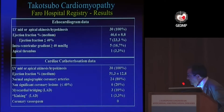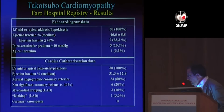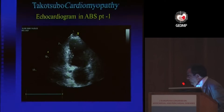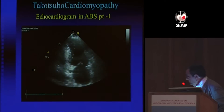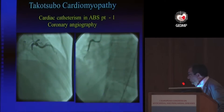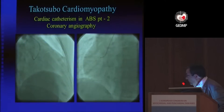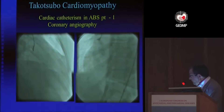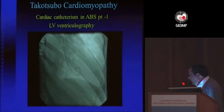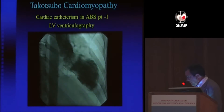Normal angiographic arteries were found in 24 patients, six patients had minor lesions, and no one demonstrated vasospasm. As you can see, the typical aspect of the echocardiogram is very characteristic. You can believe that coronary arteries are completely normal, and the shape of the left ventricle is also very typical.